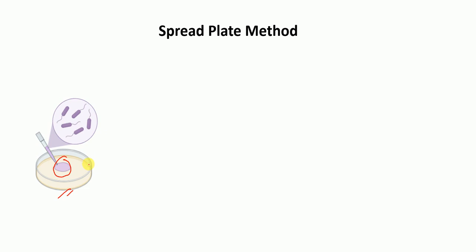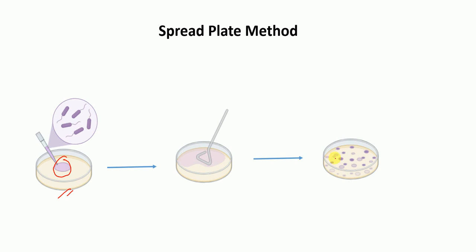Then in the next step, we spread the bacteria with the help of a spreader. Finally, we incubate the plate in the incubation chamber and let the bacteria grow. We will see colonies after 12 to 16 hours. This is the spread plate method, and this method can be used for heat-sensitive bacteria.